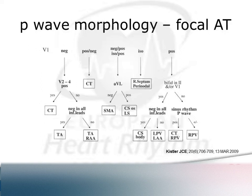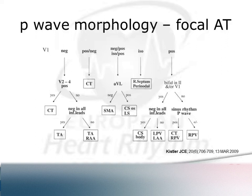To use these algorithms, you need a good unencumbered look at the P wave — not obscured by the QRS or T wave. You may need adenosine to create AV block, or ventricular pacing, to isolate the P wave morphology. These algorithms are only reliable in structurally normal hearts; once there is scar or previous ablation, they become less accurate. Generally, positive P waves in leads I and AVL suggest right-sided origin; negative suggests left-sided. Positive in V1 often means posterior or left atrial origin.